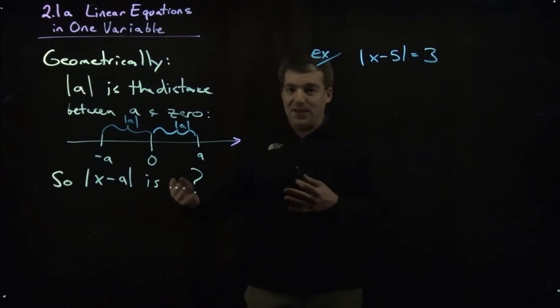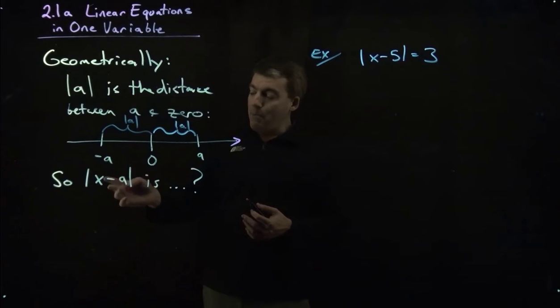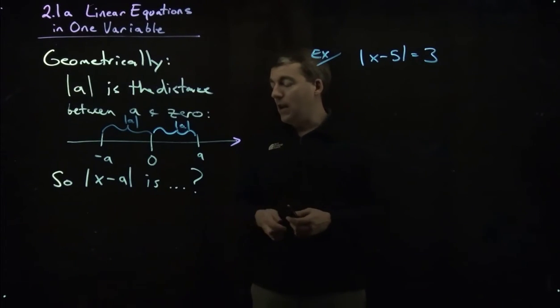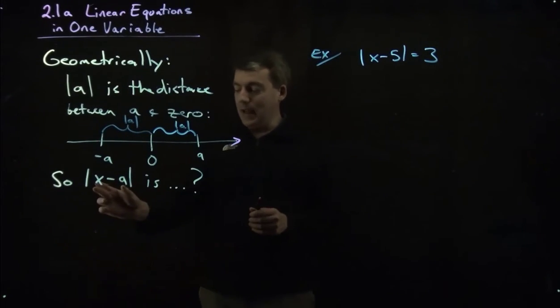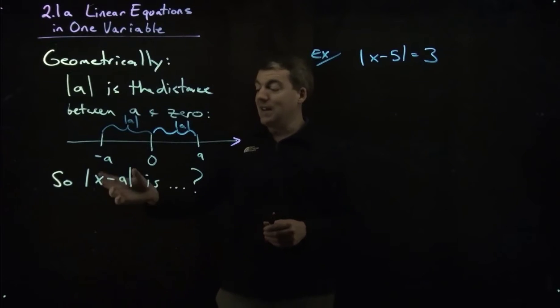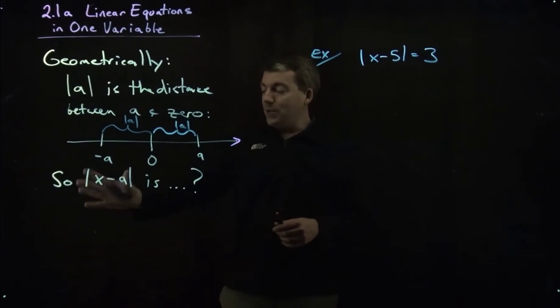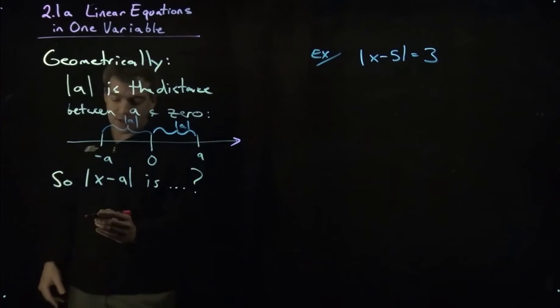Now we might, and this is a typical expression that you see a lot, the absolute value of X minus A. Well, X minus A is the difference between X and A. And so the absolute value of that is talking about the distance of the difference between X and A, as in how far is X away from A. So this is a way to express how far X is away from A.